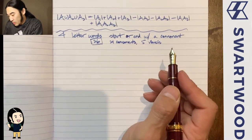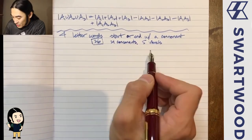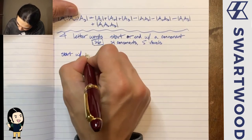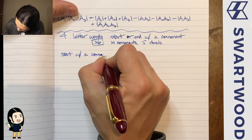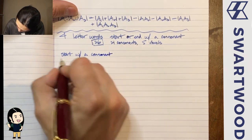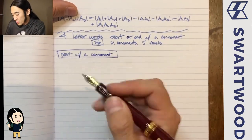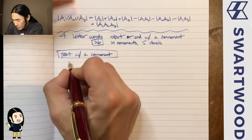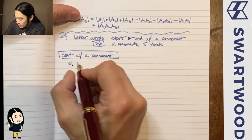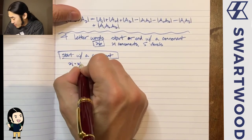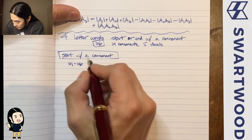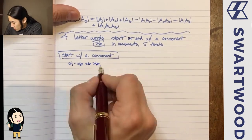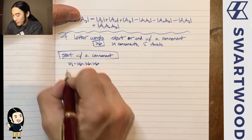I want to break this into cases. One way to be happy is to count the number of words that start with a consonant. There are 21 consonants, so you pick any of those for the first letter; after that you have free reign for the second, third, and fourth letters. Multiplying gives you the number of four-letter words that start with a consonant.